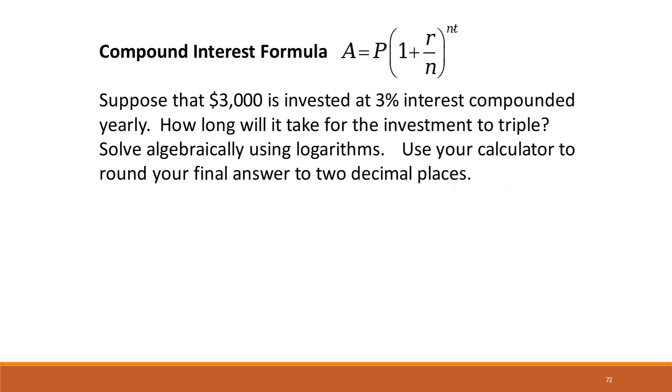The first one here says compound interest formula is A equals P times 1 plus r over n to the nt. Suppose that $3,000 is invested, we know that's our principal, that's our P, at 3% interest compounded yearly, so our r is 0.03, compounded yearly means that n is equal to 1.